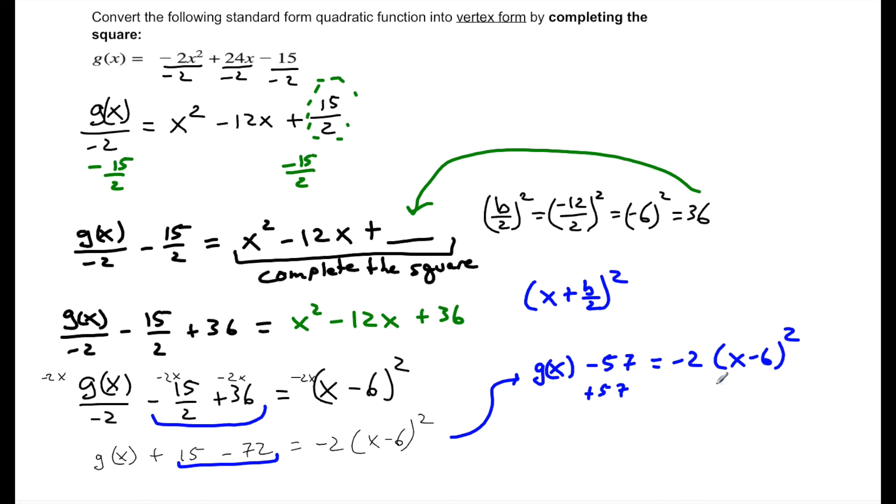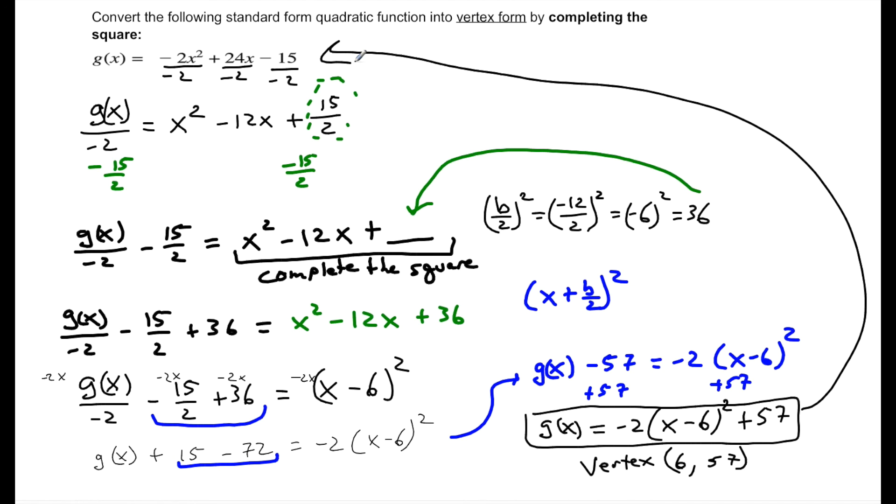And add to the other side. That is my answer in vertex form with the vertex 6, 57. You can expand this out into standard form and check that it matches up with what you started with. Try it out.